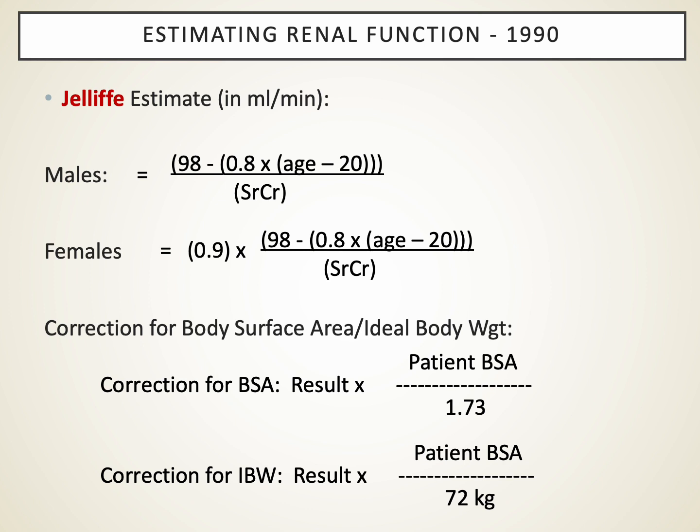In the 90s, the next formula developed was called the JELF estimate. It used some similar variables but came up with a different formula, corrected for body surface area and ideal body weight. If you use a calculator or go to online calculators or a phone app to estimate creatinine clearance based on serum creatinine and age, you'll find that these different estimates sometimes produce pretty similar results and sometimes wildly different estimates. We use these as a ballpark guess of renal function, knowing they're not all that precise.